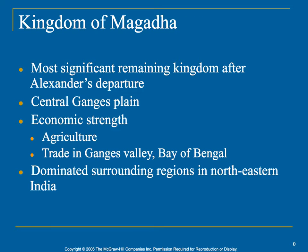So you have the kingdom of Magadha, which basically rules the central Ganges plain. Their economic strength is agriculture — the growing of food. They're trading in the Ganges valley area and in the Bay of Bengal, and they dominate the northeastern part of India during this time period.